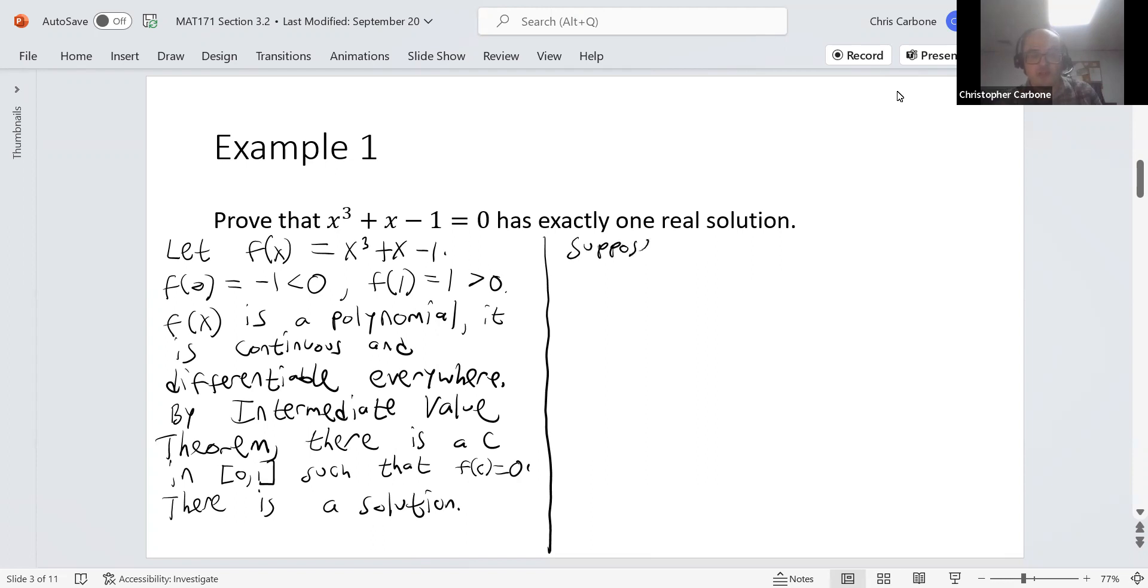So we're going to suppose that a and b are two solutions. This means that f of a is the same as f of b, which is that they're both equal to zero. So by Rolle's theorem, since we already know that f of x is continuous and differentiable, we know that there is a value c in our open interval a to b.